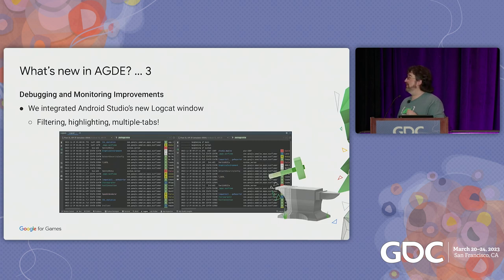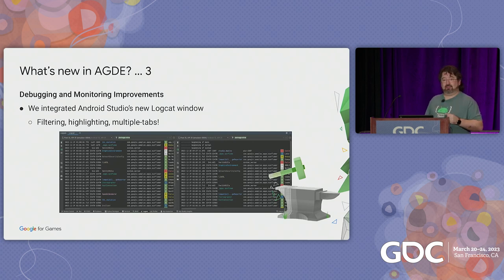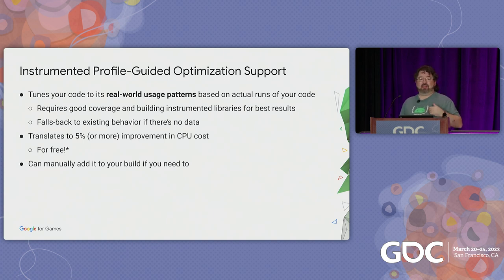Another thing we've added is debugging and monitoring improvements. For example, we've integrated Android Studio's new Logcat window, which offers filtering, highlighting, and multiple tabs — and now you can access that from Visual Studio. And here's probably the meaty feature we want to talk about in this talk: we've added instrumented Profile-Guided Optimization support, or instrumented PGO.